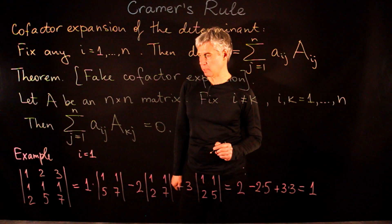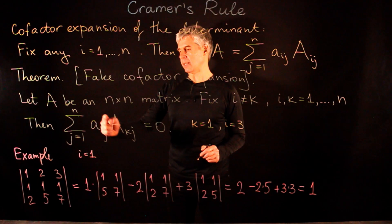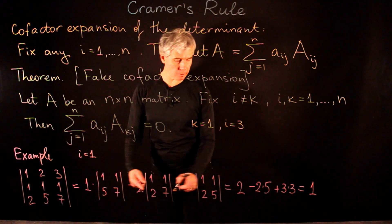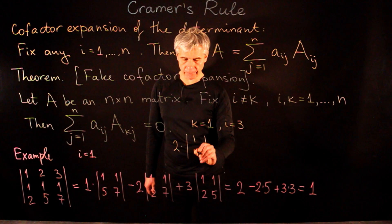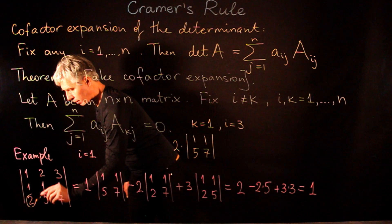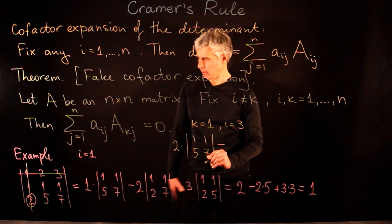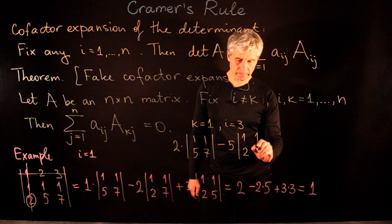Now let us run the fake cofactor expansion for this matrix. We take k equals 1 and i equals 3. This means we take the entries of the matrix corresponding to the last row, but the cofactors correspond to the first row. So we get 2 times the determinant [1,1; 5,7], with the entry taken from the last row but the cofactor from the first row.